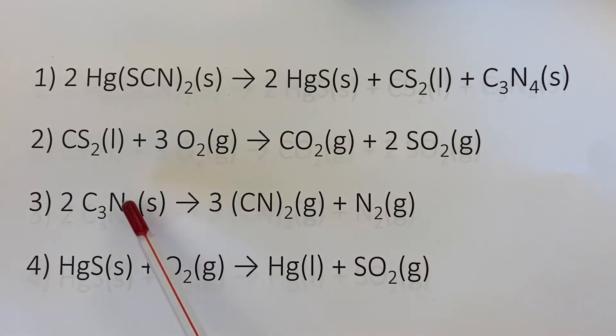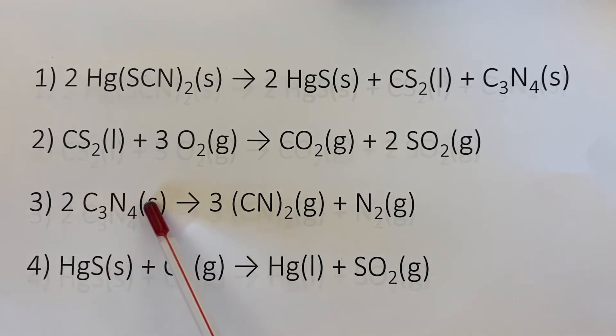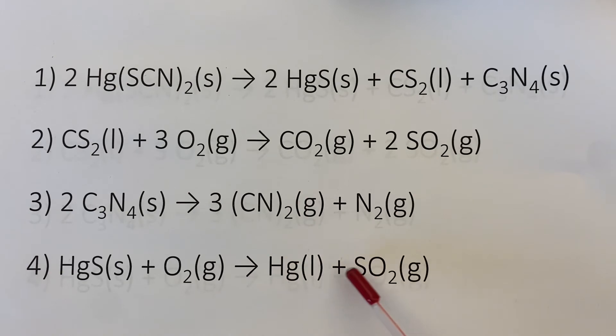And the graphitic carbon nitride then decomposes, producing some dicyan gas and some nitrogen gas. Now this doesn't happen all the time. A lot of this goes unreacted and that becomes the main component of the crazy structure that we see growing out of the dish. And there's also a possibility of mercury sulfide reacting with oxygen from the air to produce some liquid mercury and some sulfur dioxide gas again, but I did not see any liquid mercury in my reaction, so either this reaction didn't happen or it happened on such a small scale I couldn't see it.